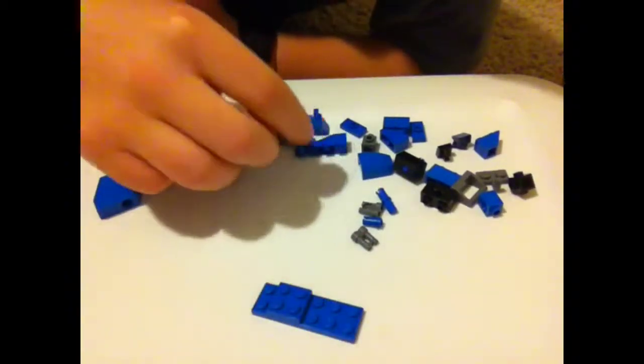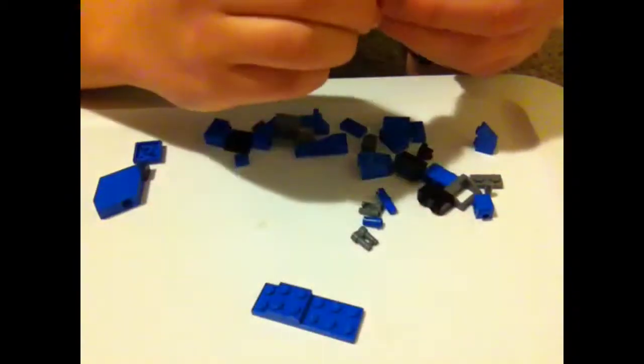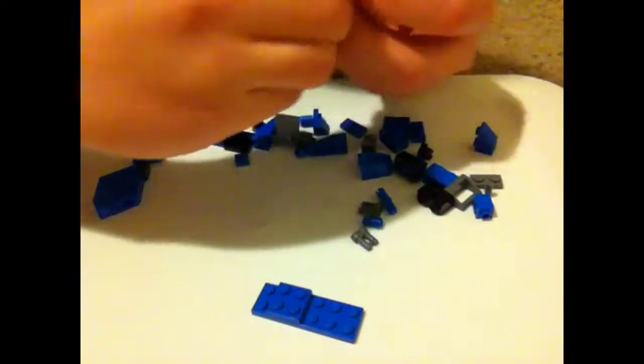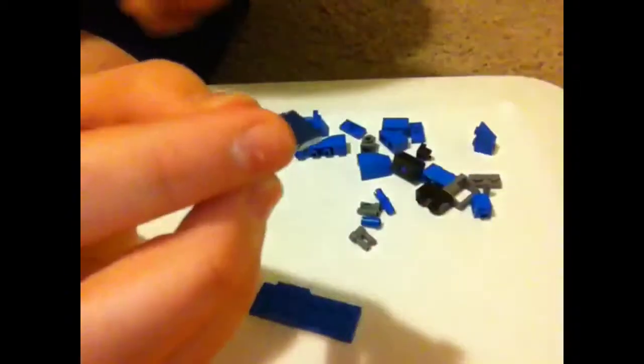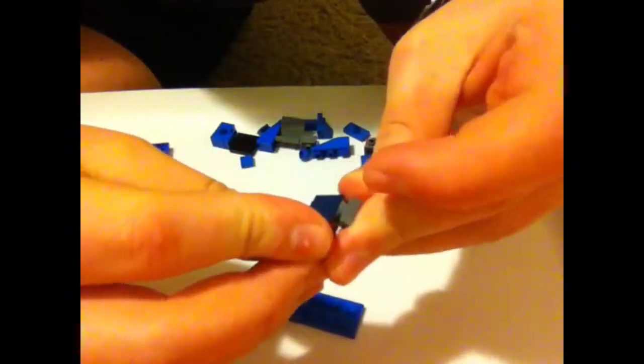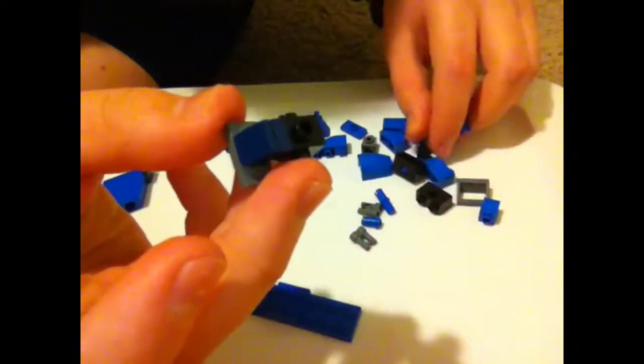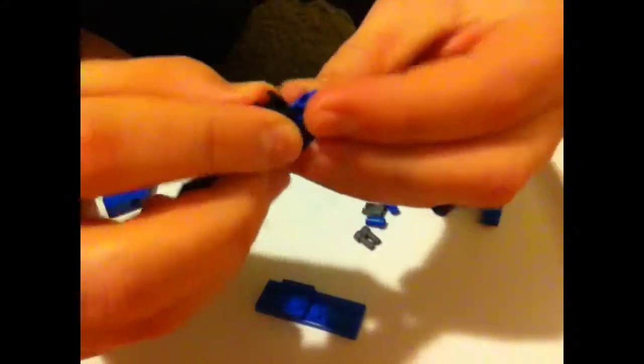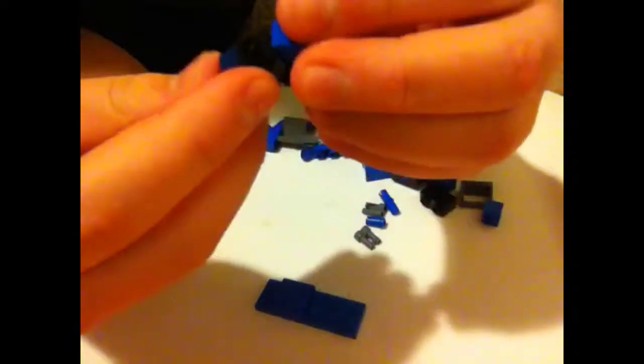And then we're going to take this piece and take these two pieces, put them on top of each other, and put them on top of this. And we're going to take these pieces and put them like this. And we're going to take this piece and put it like this and clip it on right here.